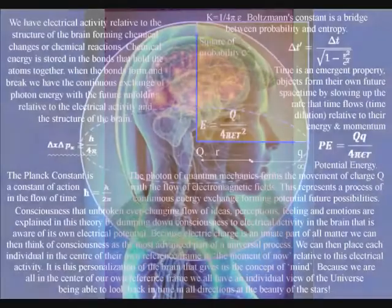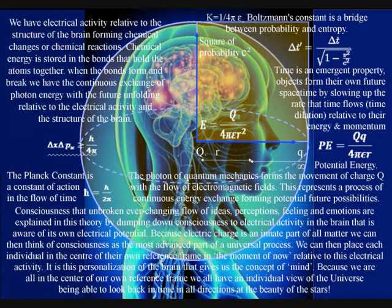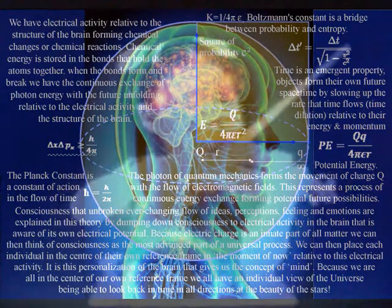In this theory, because light is an electromagnetic wave, the electroactivity in the brain that forms consciousness is the most advanced part of a universal process.